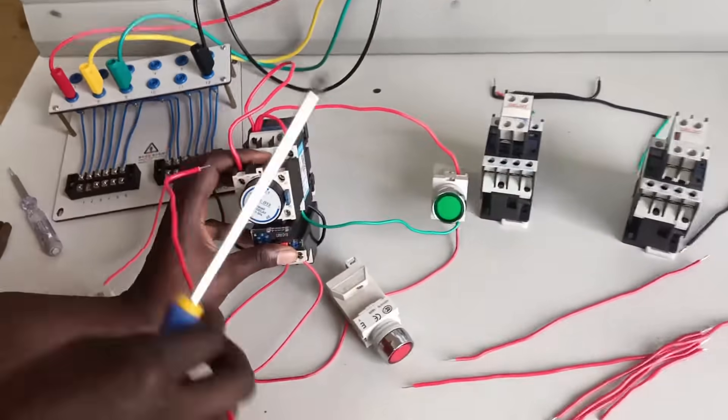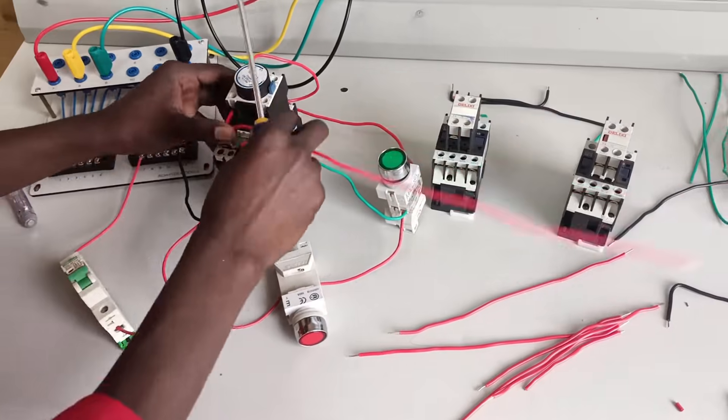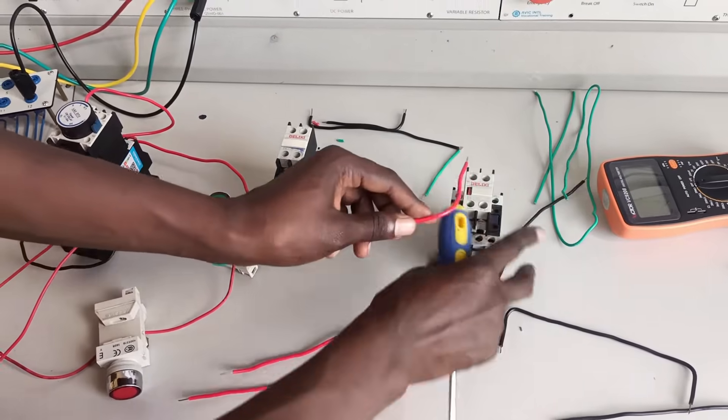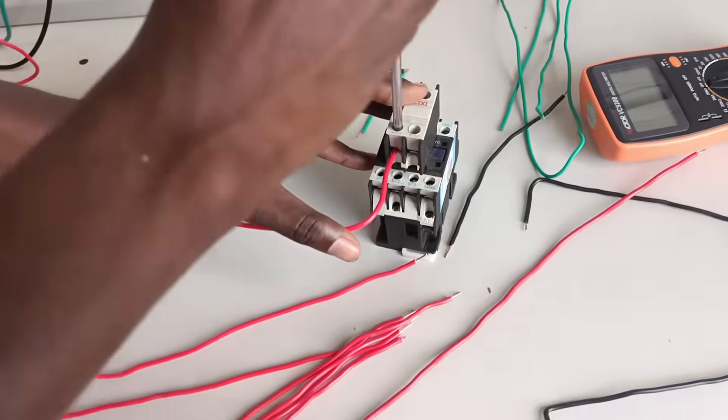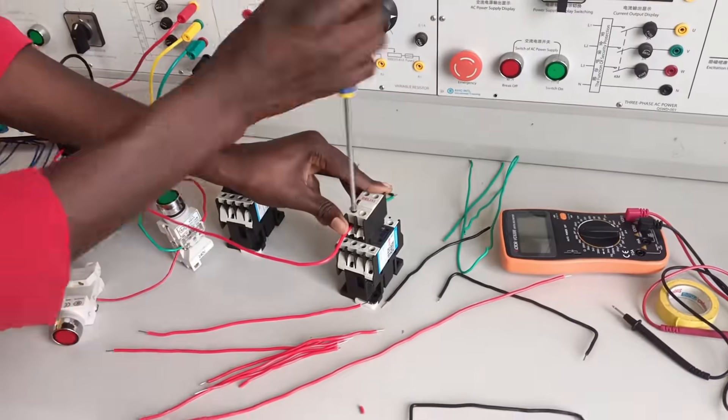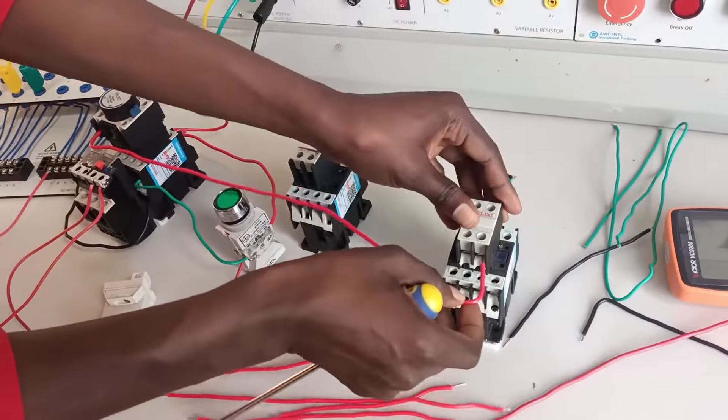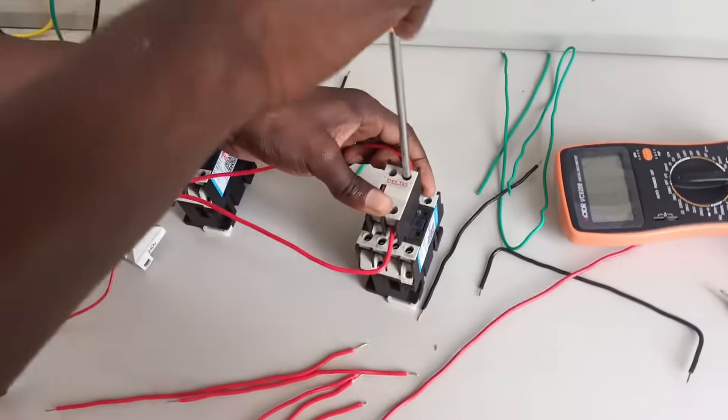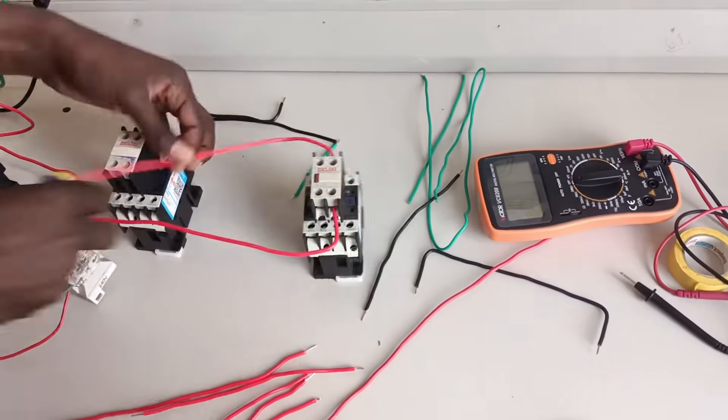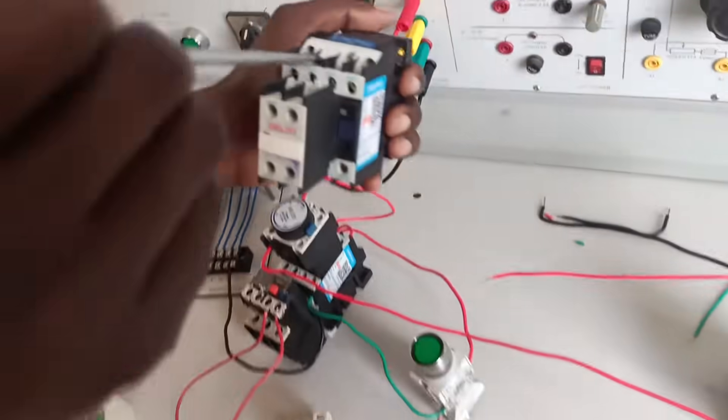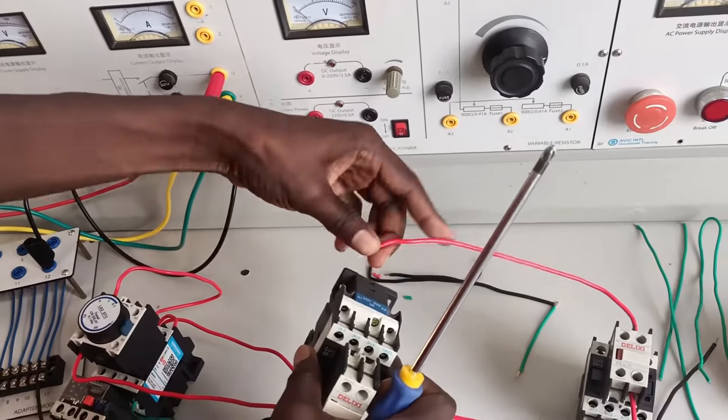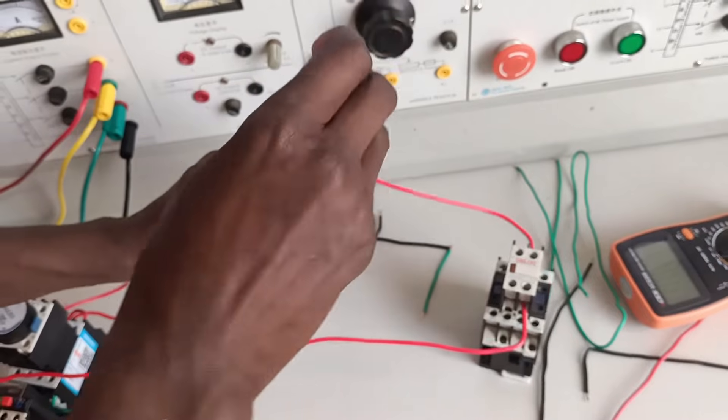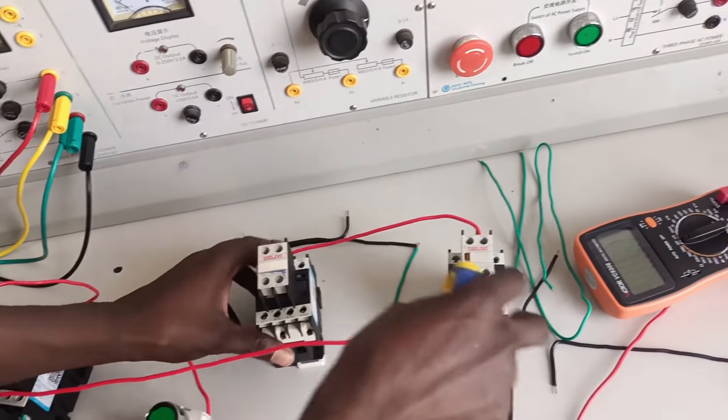Now let's do it for the timer and the remaining contactors. From the normally closed of the timer we are going to take it to the delta energizing coil, but through the normally closed terminals of the star contactor. That one we call interlocking connection. I'll tell you why we do that. From pin 22 of the star, we'll go to the A1 of the delta contactor. That's contactor 2, for the delta.